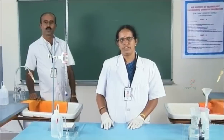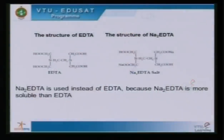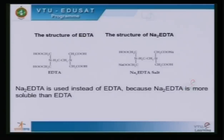The structure of EDTA is as shown. EDTA is a derivative of diethylamine containing four acetic acid groups, but EDTA as such is less soluble in water. Therefore, the disodium salt of EDTA is used for the estimation, where the two hydrogens of EDTA are replaced by sodium.